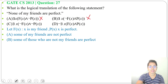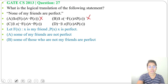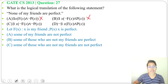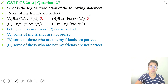Option C: there exist x, negation of f(x) and negation of p(x). So, there exists an x such that x is not my friend and x is not perfect. We can say some of those who are not my friend are not perfect. This is not the same as the statement, so option C is not the answer.